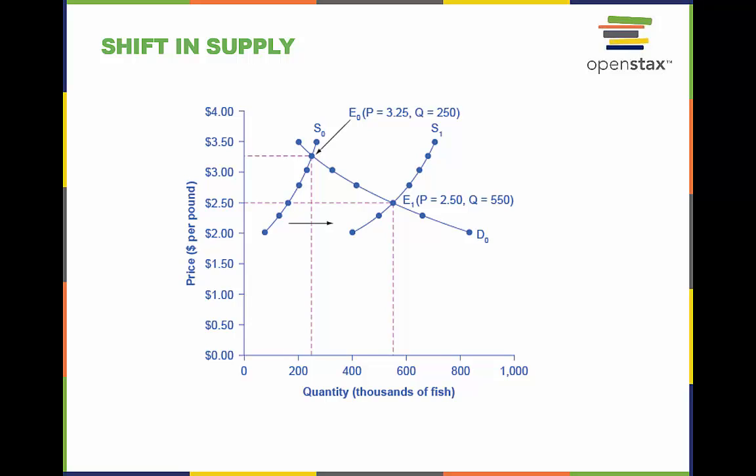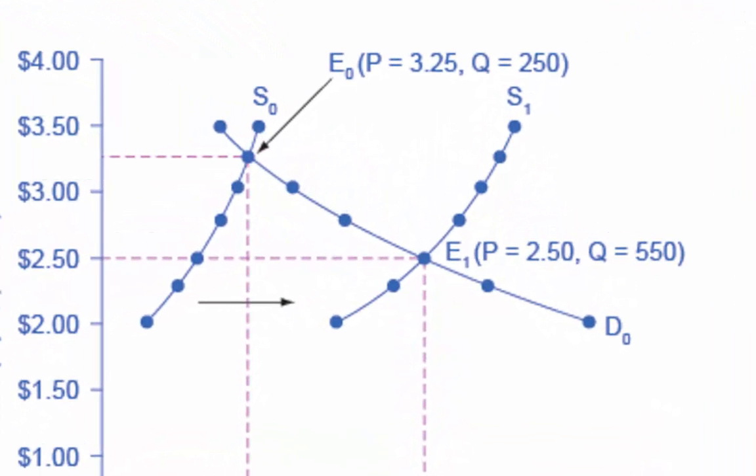In this case, the weather was good, so it is easier to catch more tuna and the cost of production goes down, with the desired profit remaining the same. The overall price decreases for every quantity supplied of tuna. First, we determine the original demand and supply curves — in this case, that is S-O and D-O, which tells us the original equilibrium E-O.